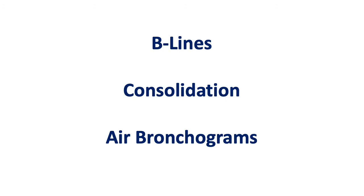So we've seen all of these findings: B-lines (both simple and confluent), subpleural and deeper/larger consolidations, and both dynamic and static air bronchograms. There is no single finding that is a signature appearance of COVID-19 infection — all of these could be found in atypical bacterial infections as well as different viral pneumonias. We need more data to determine which findings are more suggestive of COVID-19 and which can risk-stratify patients. Fortunately, many people including our own ultrasound group are researching those questions.